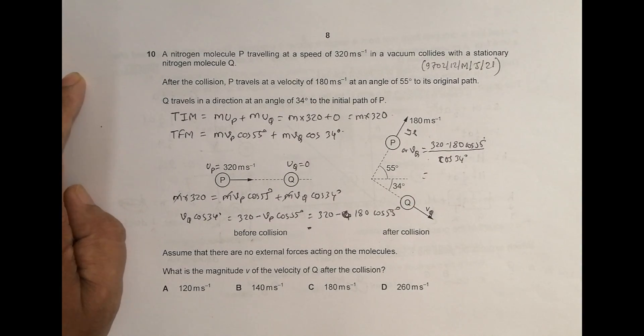it gives me, so it is 320 minus, bracket, cos 55, equal to, divided, divided, we have got, cos 34, equal to.